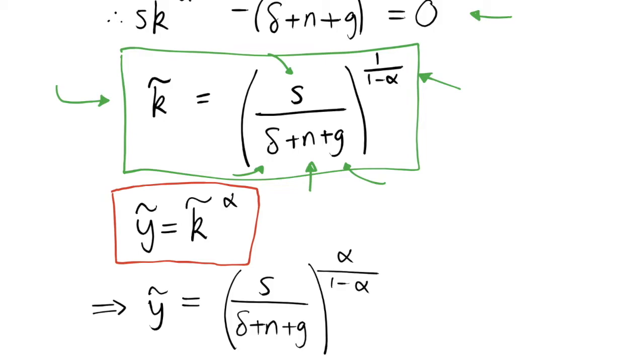And we can see then from the fact that we have what k tilde is in this equation above, it's very simple to figure out what y tilde is. So we just substitute in our k tilde above and we see that it's just the same thing raised to the power of alpha.